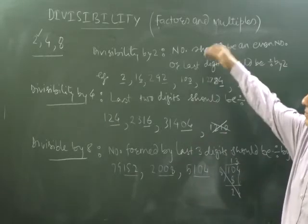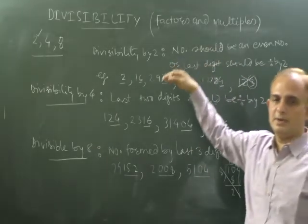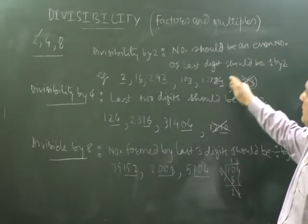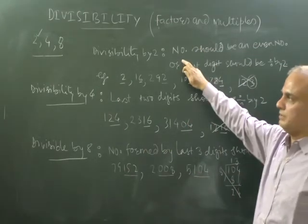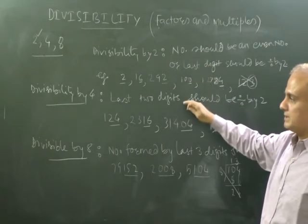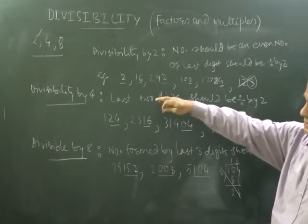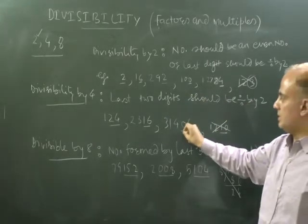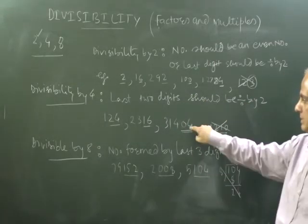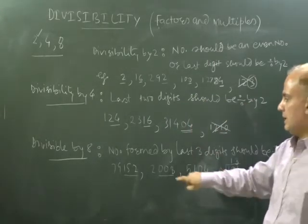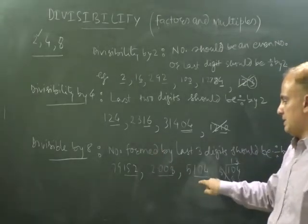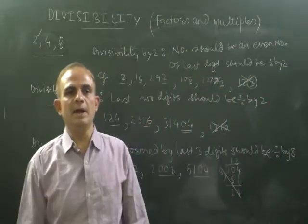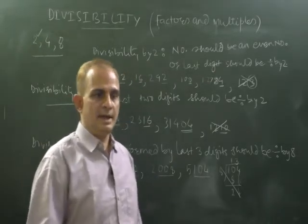So in this way you may check divisibility by 2, 4, and 8. It is very simple: for 2, the last digit should be divisible by 2; to check divisibility by 4, the last 2 digits should be divisible by 4; and to check divisibility by 8, the last 3 digits should be divisible by 8.